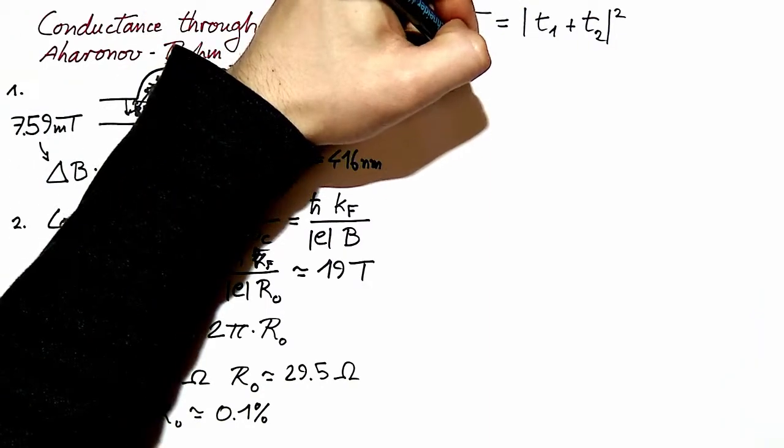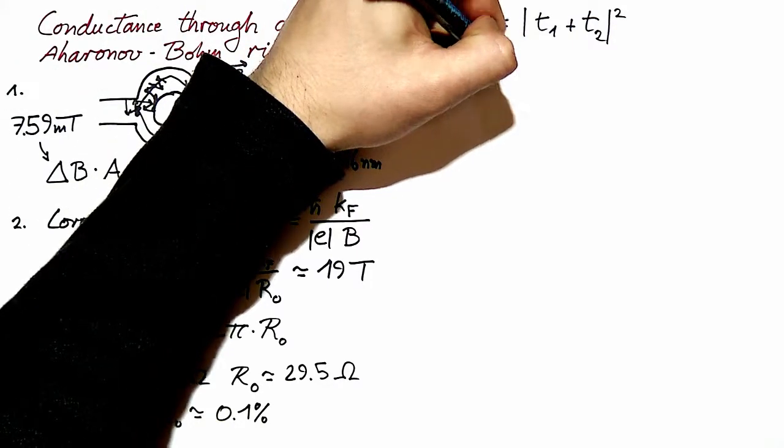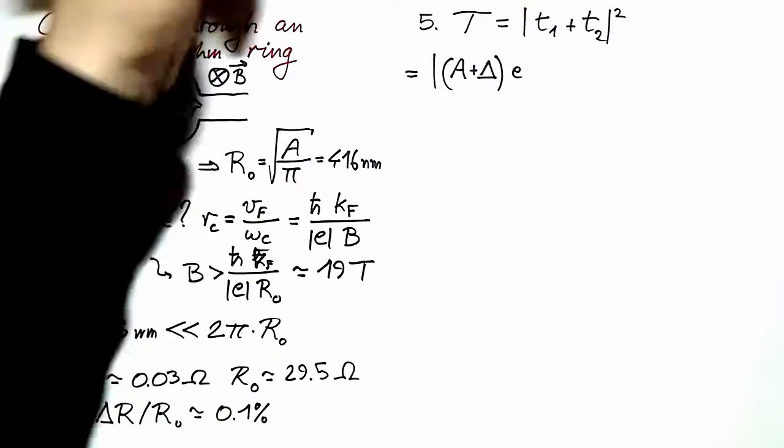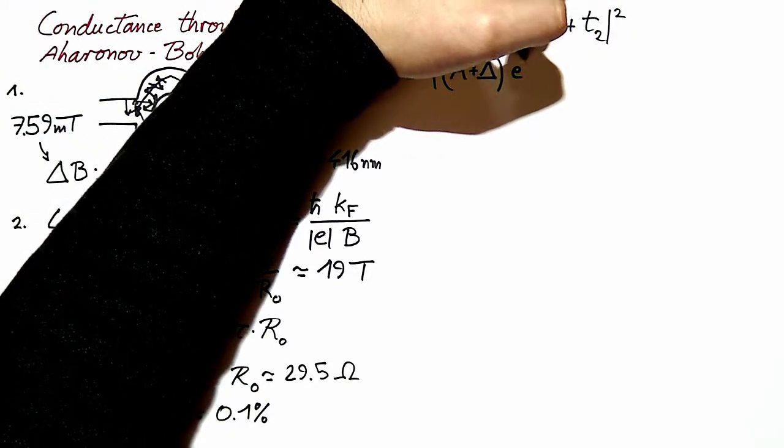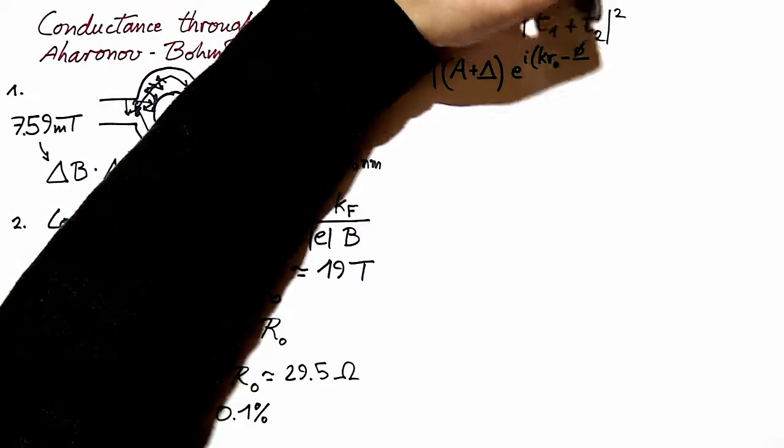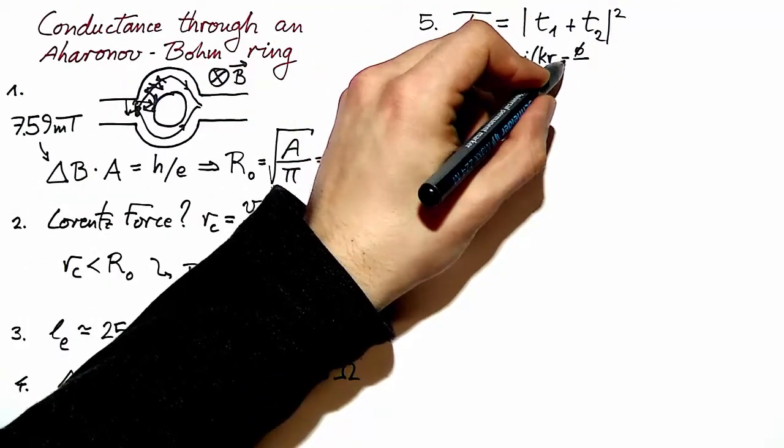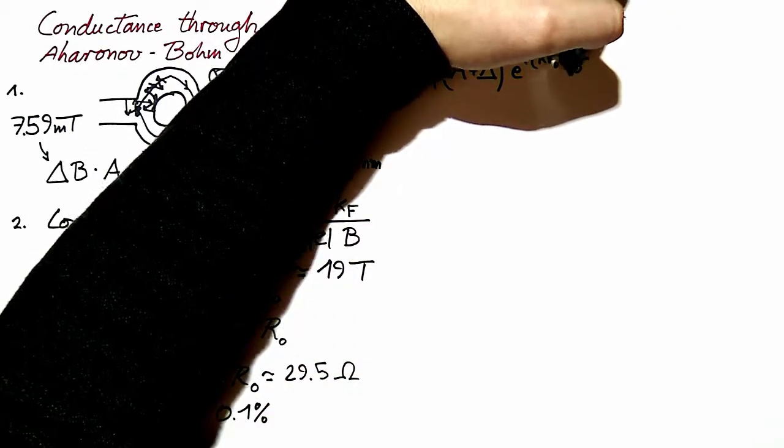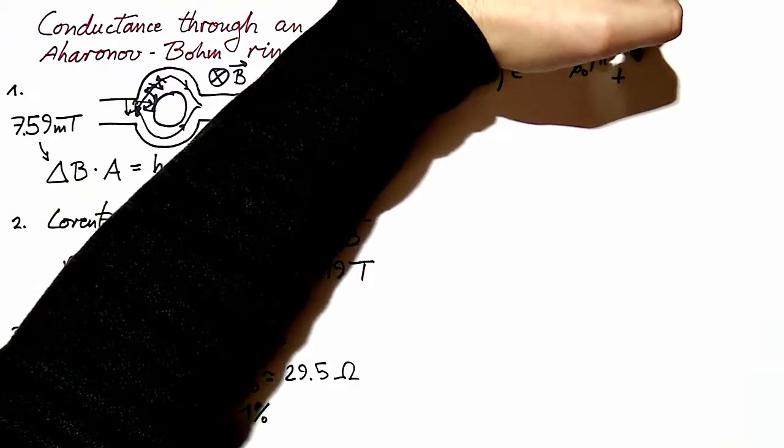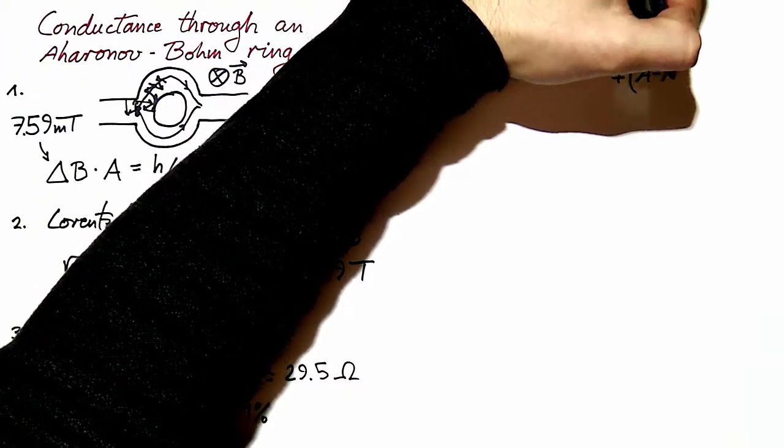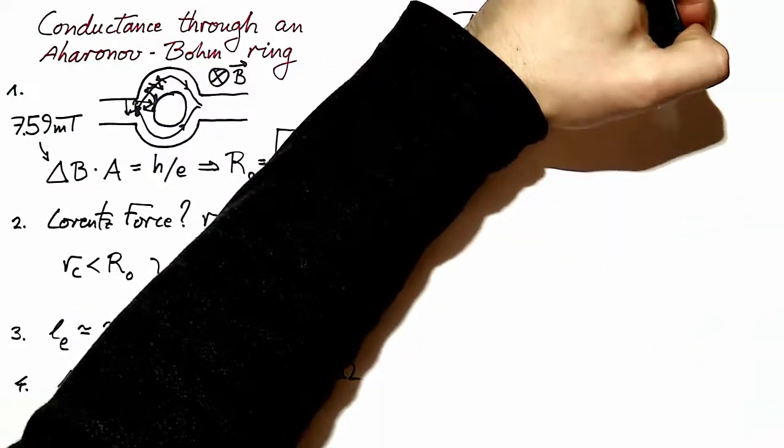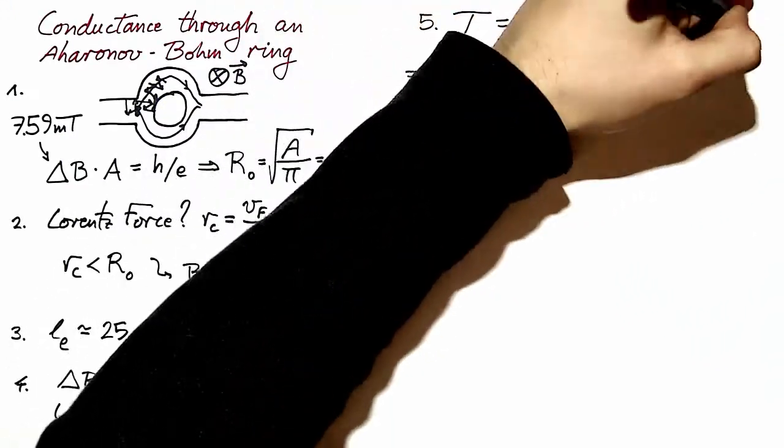In this case, the two transmission probabilities are described by different amplitudes. In one case, let's say we have A plus Δ times the wave propagating in one arm which acquires an Aharonov-Bohm phase with a negative sign. In the other arm, we have A minus Δ as an amplitude, and the phase, the Aharonov-Bohm phase, will have a plus sign.